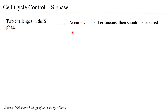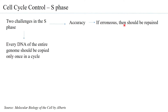If the replication process has been erroneous, those errors should also be repaired. So during the S phase, the DNA repair systems of the cell are active and carry out repair of mistakes made during replication.